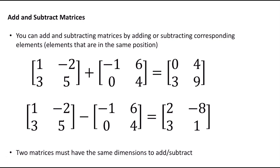We can also add and subtract matrices. You can add or subtract matrices as long as they have the same dimensions — corresponding elements must be in the same position. Here I have two 2 by 2 matrices. I add the elements in corresponding positions: 1 plus negative 1 is 0, negative 2 plus 6 is 4, 3 plus 0 is 3, and 5 plus 4 is 9. That's how you add matrices.